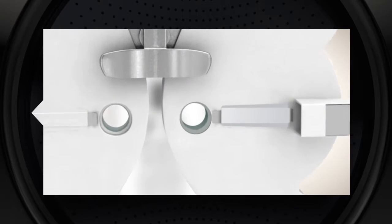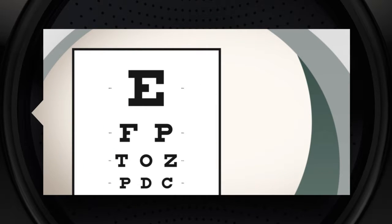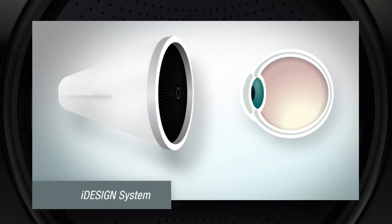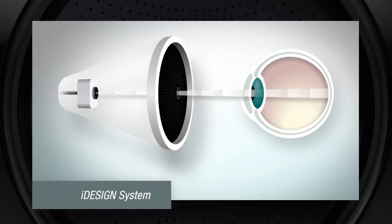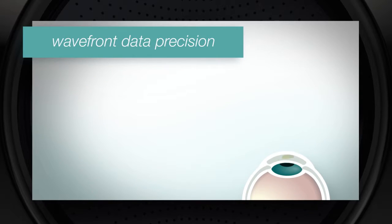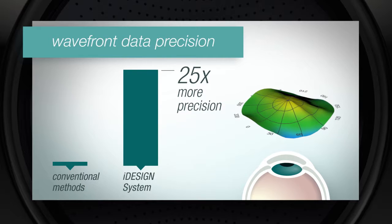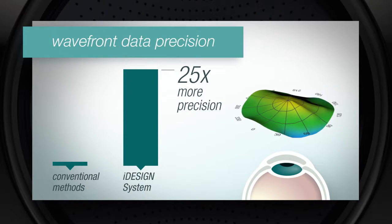The first step to correcting vision is to understand why a patient cannot see clearly. Ordinary measurement for glasses and contact lenses uses predetermined steps to approximate refractive error. With the iDesign system, optical imperfections or aberrations can be determined by projecting light into the eye, which reflects off the retina and is captured by the system's special sensors. This wavefront data is then analyzed and displayed with 25 times more precision than conventional methods to determine the amount of a patient's refractive error.